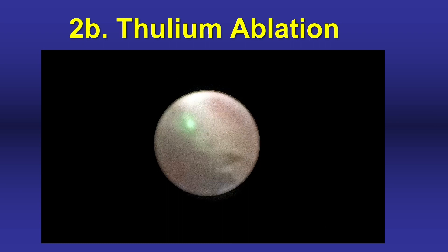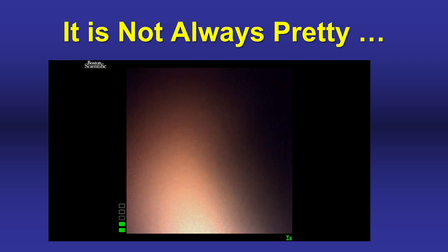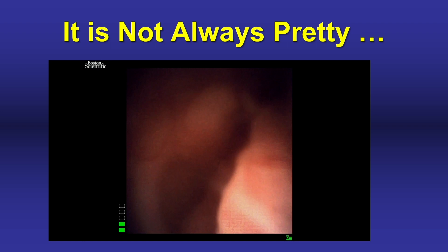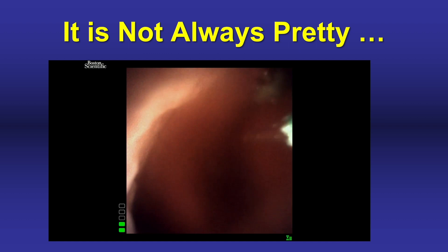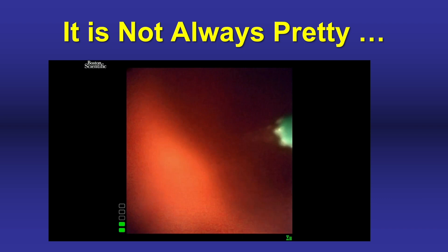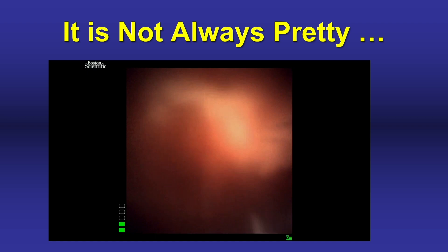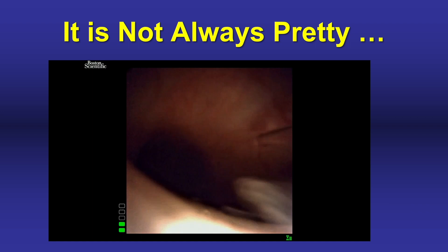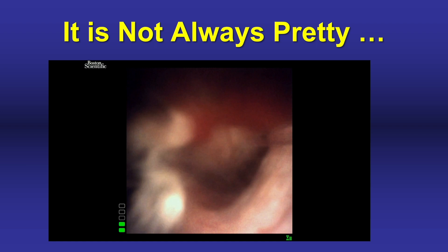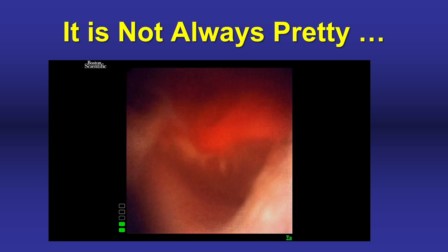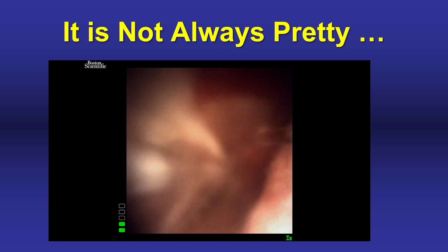Not every case looks pretty. Going up the access sheath into the kidney, the area that was biopsied was bleeding and visualization was very poor. The key is to first find the biopsy site, get the bleeding under control so visualization clears up, and then proceed to ablate the tumor. The key points are: not every case looks good, and it comes down to getting control first so you can see, then figuring out the ablative strategy.